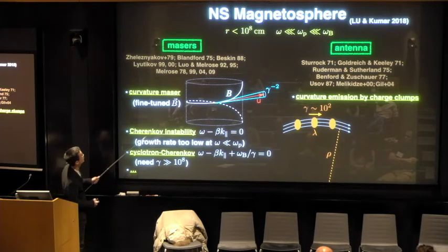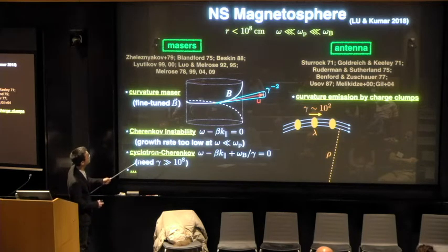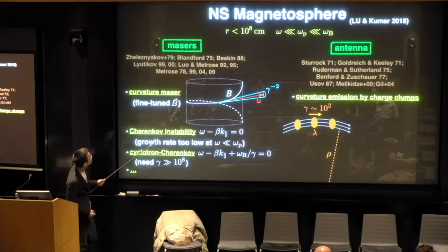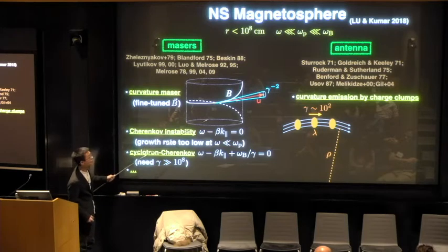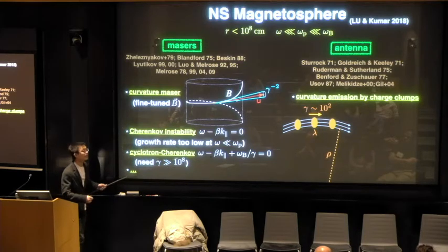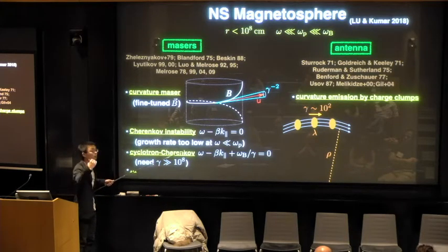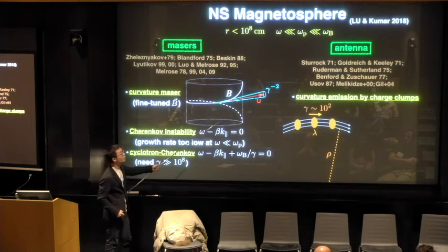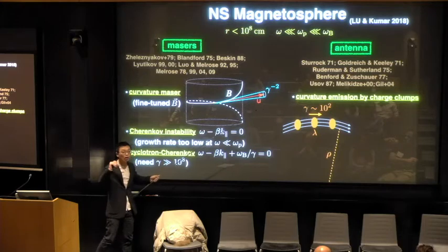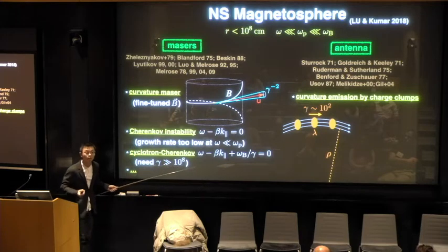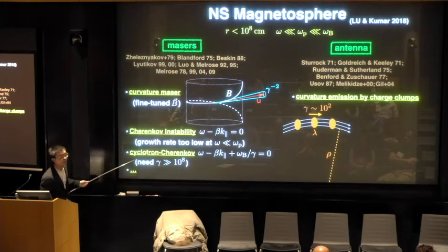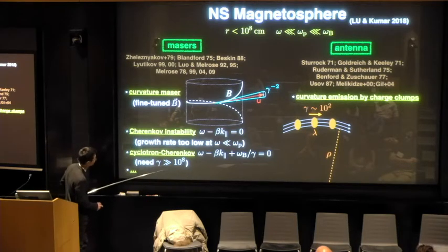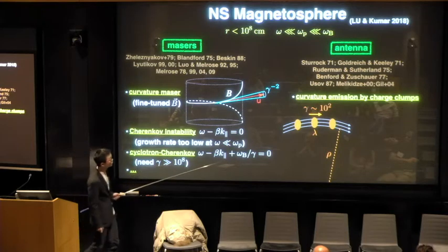Let's take a look at the curvature maser situation where a lot of people have worked on, including Roger. The curved magnet field cannot be confined in a plane. It has to have torsion, out of plane torsion. Even in that scenario, the maser cone is within one over gamma squared tiny cone. That amount of fine tuning you need in order to generate FRBs, you need all B fields to be parallel. There are lots of other fine tunings that you need in order for other maser mechanisms to work.